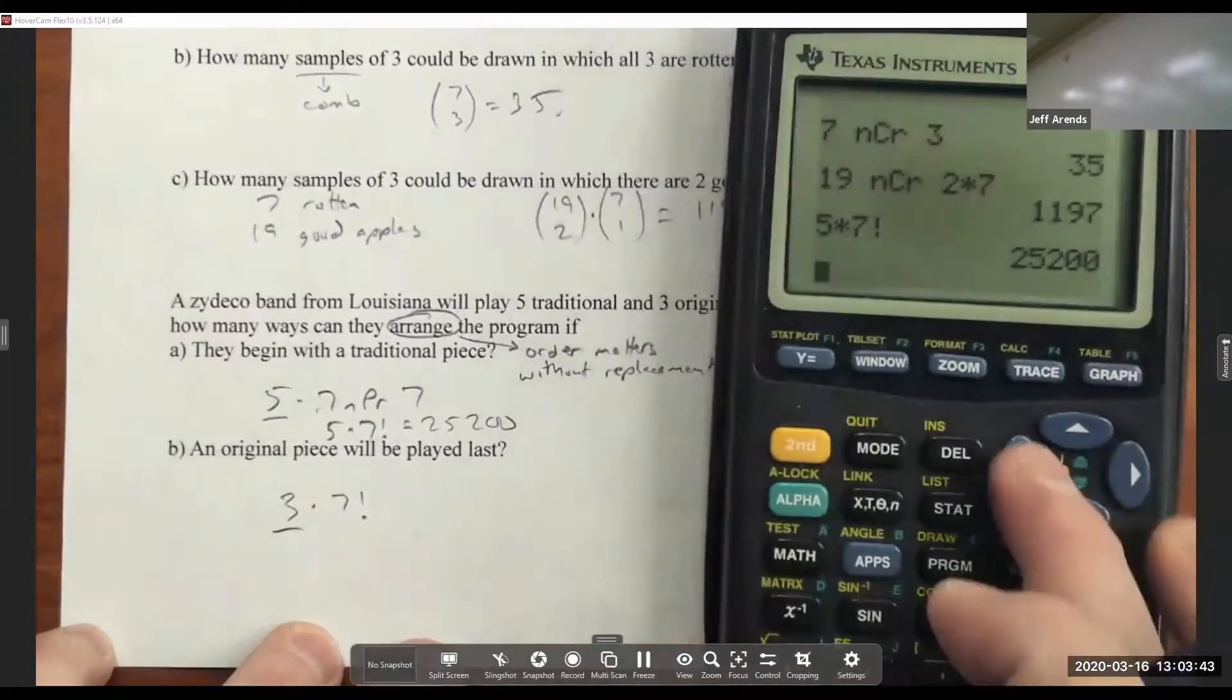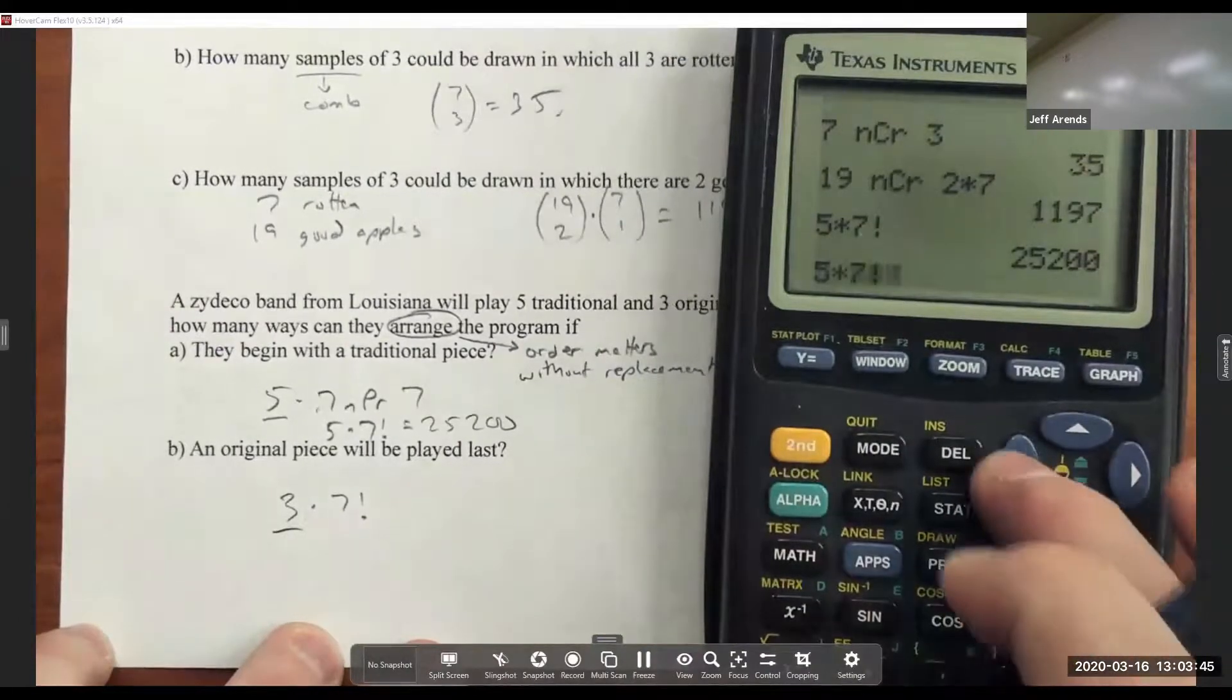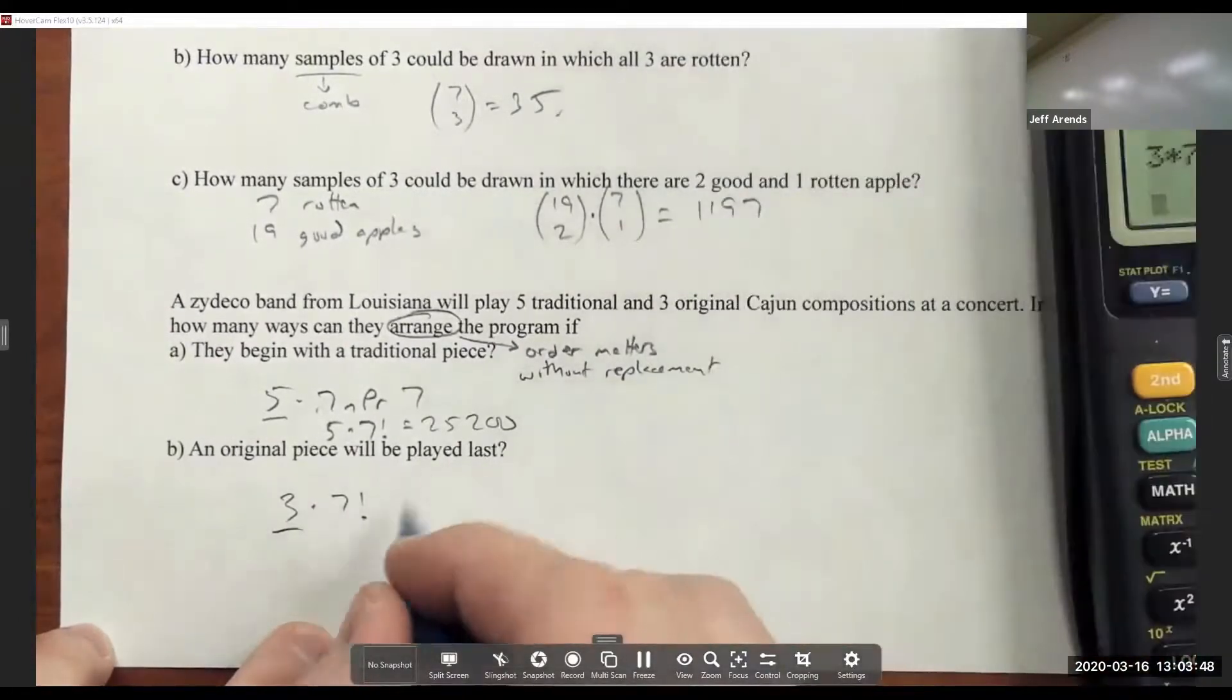And then there's seven permute seven or seven factorial ways for the remaining seven songs. So I'd go three times seven factorial, which is 15,120.